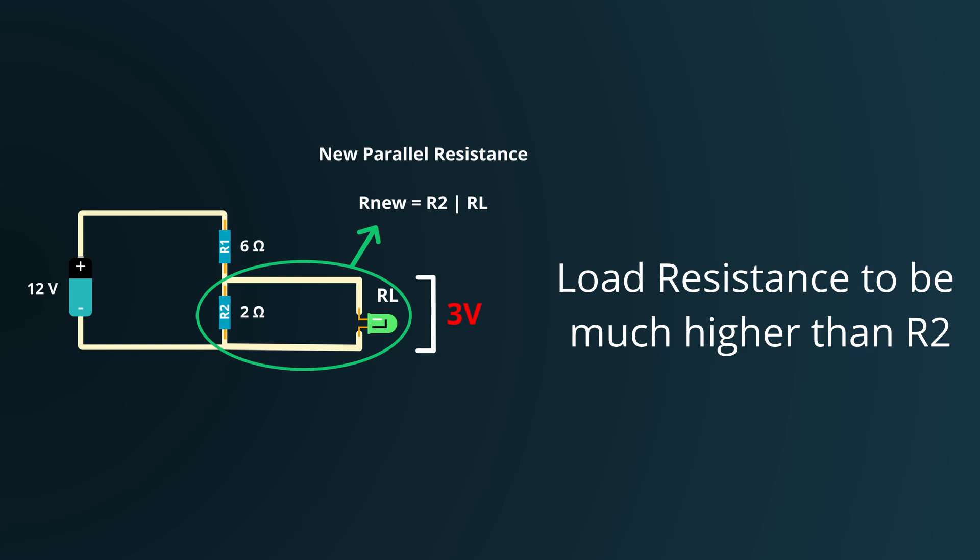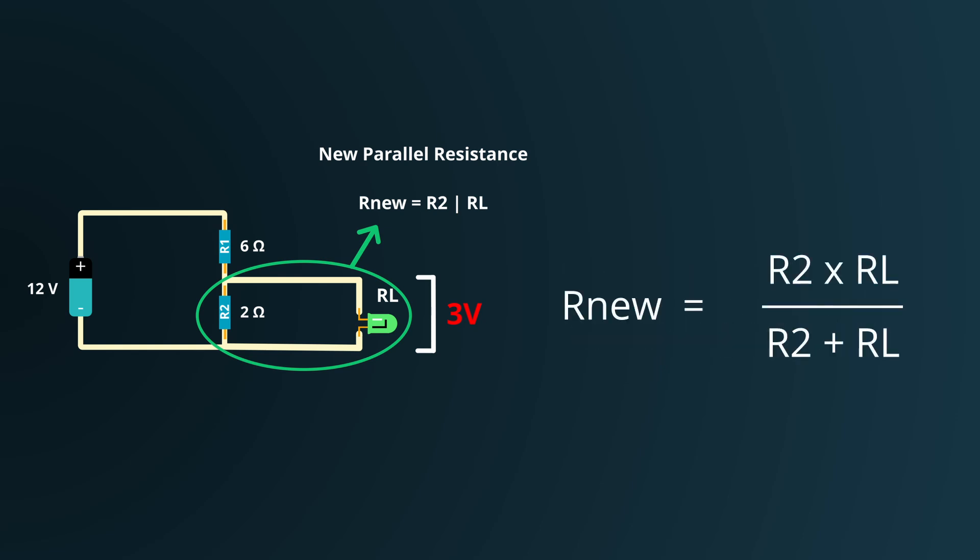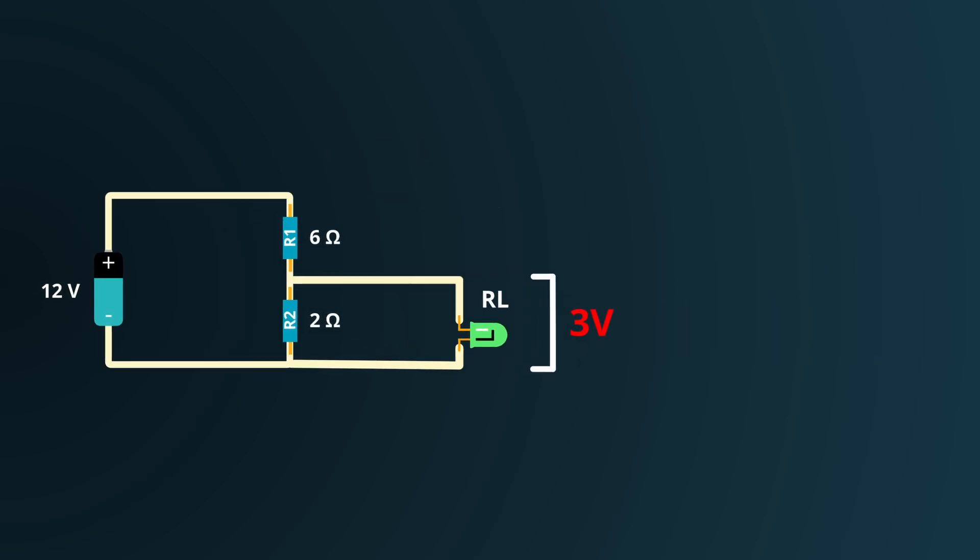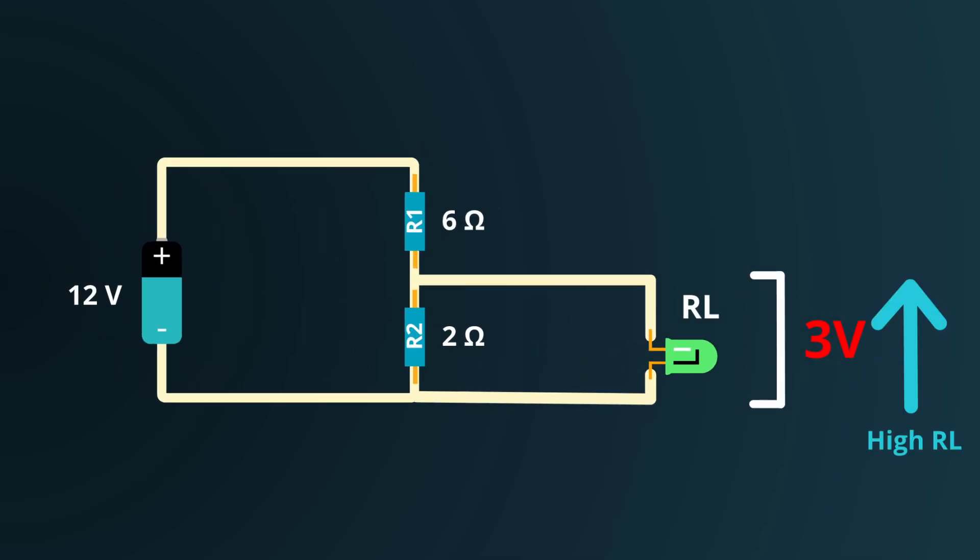Ideally, we'd want the resistance or impedance of our LED or any load to be much higher than that of our R2. Why is that? Because if the load's resistance is comparable to or lower than R2, it can effectively act as a parallel resistor to R2, altering the desired voltage at the tapped node. The more the load's resistance deviates from this ideal high impedance scenario, the further our real world voltage will drift from the intended 3 volts. In simpler terms, a high impedance load will observe the voltage without drawing much current and thus not disturb our meticulously set voltage division. However, a low impedance load would pull more current, affecting the voltage division.